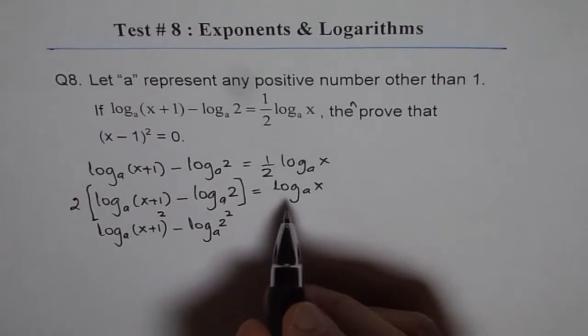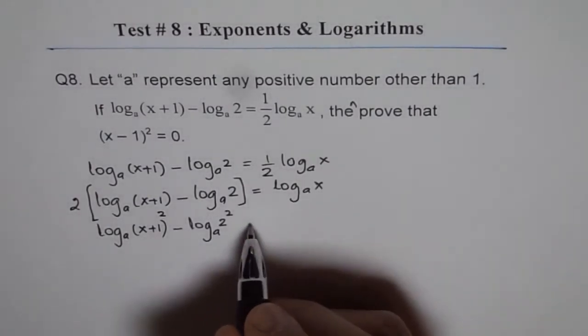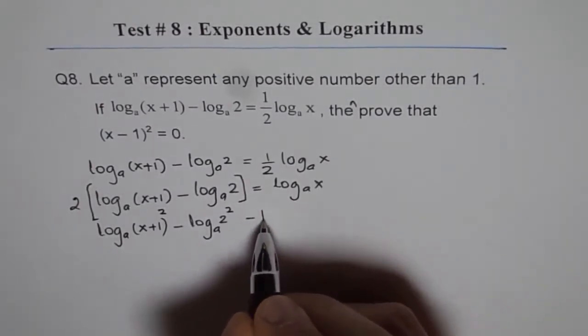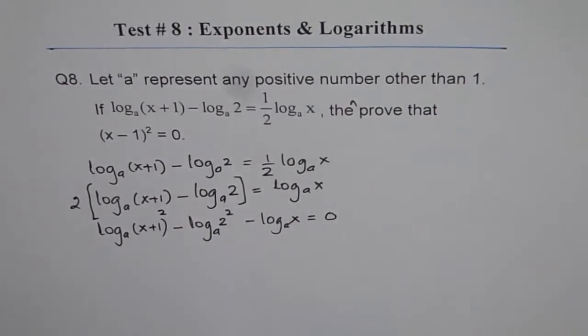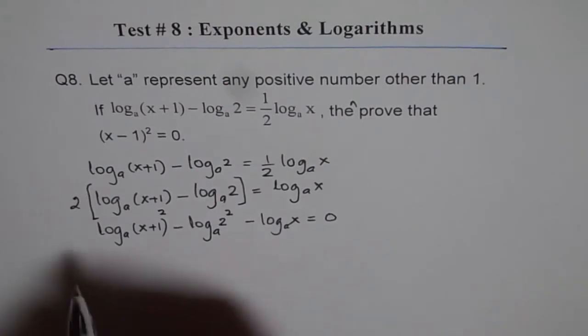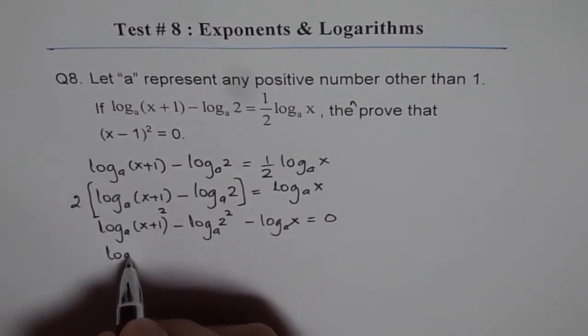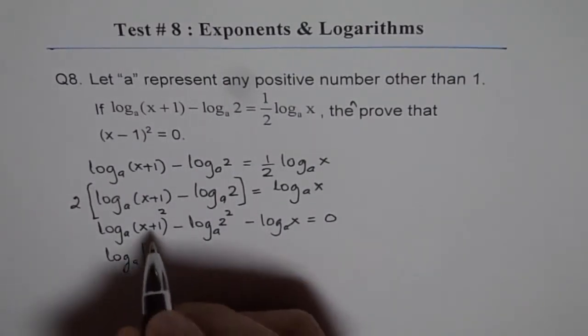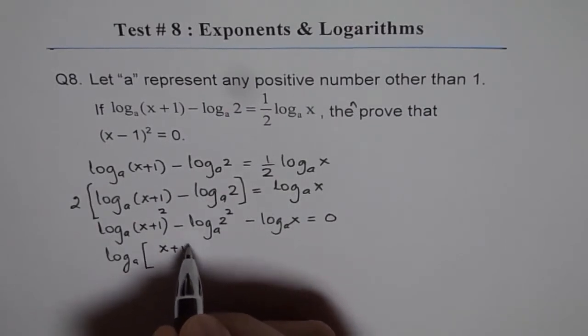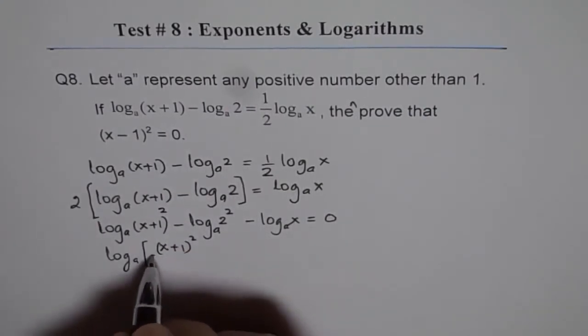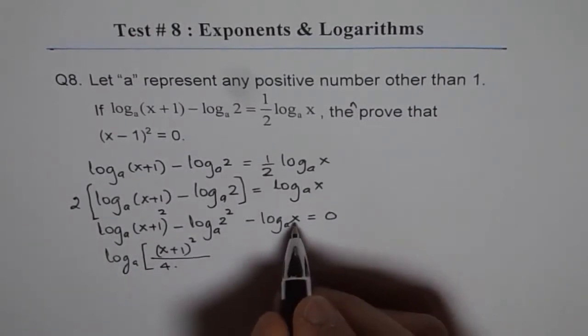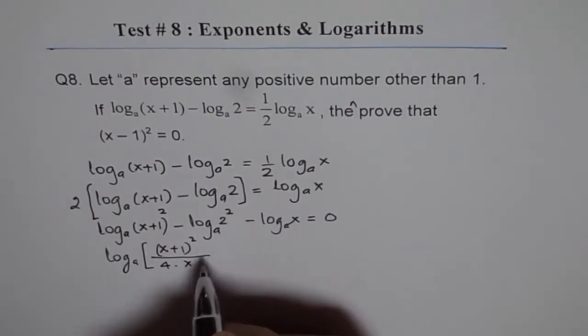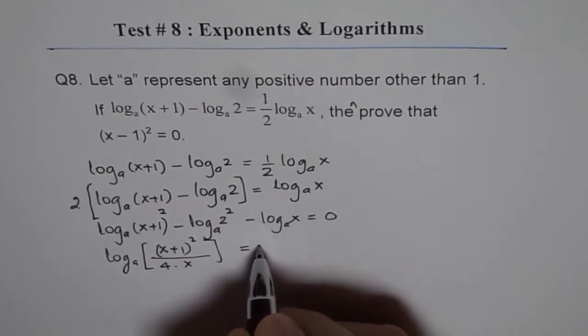Let's bring this to the left side and that is minus log A of x equals 0. Now this could be combined and all these logs can be combined and written as x plus 1 whole squared divided by 2 squared is 4 times x equals 0.